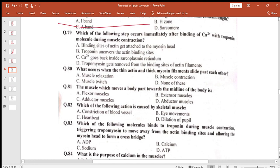During muscle contraction, which of the following elements maintain constant length? A band, which doesn't change. Which step occurs immediately after binding of calcium with troponin molecule? Tropomyosin gets removed from the binding site of actin filament. When thin filament and thick myosin filament slide past each other, muscle contraction hogi.